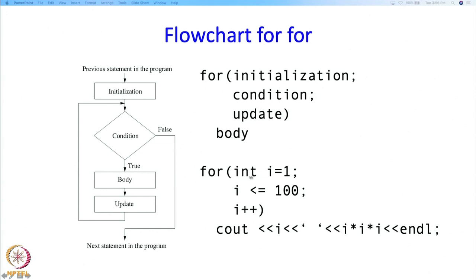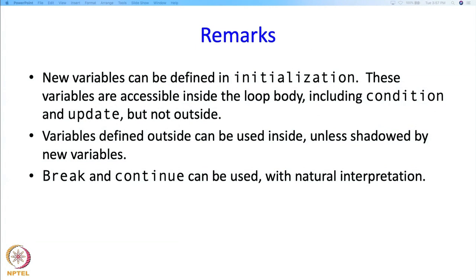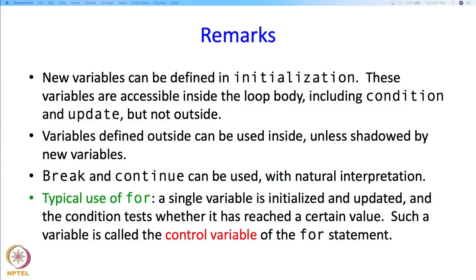Otherwise you get a new name that vanishes as soon as the for loop execution ends. Break and continue can be used with the natural interpretation — the moment you come to a break the for statement ends; if you come to a continue then you do the update and the rest of the body is skipped. The typical use of the for is that a single variable is initialized and updated and the condition tests whether it has reached a certain value — this variable is called the control variable of the for statement.